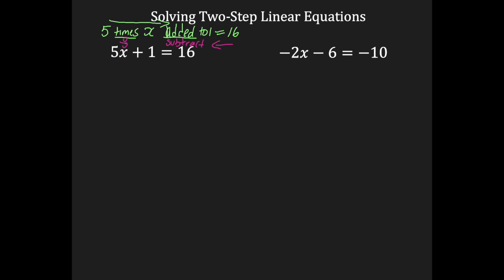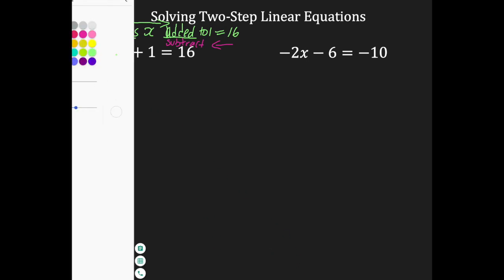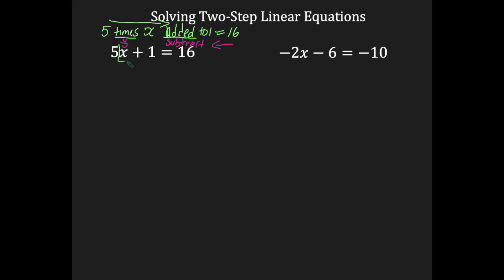Let's take a look at what solving looks like. I usually put a box around my variable. Now connected to my x is 5 by multiplication and 1 by addition. This box helps me to know who I should get rid of first. Because the 5 is directly connected to the x, I will not eliminate that first — whoever is touching the box gets removed last. So we're going to get rid of the 1 first. The 1 is connected by addition, so we do the opposite and subtract 1 on both sides. I wrote minus 1 here and minus 1 here, put it under the 16 because they're like terms.